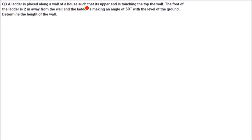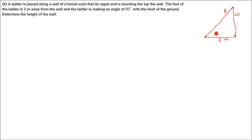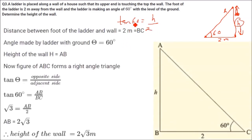A ladder is placed along a wall of a house such that its upper end is touching the top of the wall. The foot of the ladder is 2 meters away from the wall, and the ladder is making 60 degrees from the level ground. Determine the height of the wall. Let us take the height as H. Using tan 60 equals perpendicular by base, H by 2, and tan 60 is root 3. So root 3 equals H by 2, giving H equals 2 root 3. This is the answer.